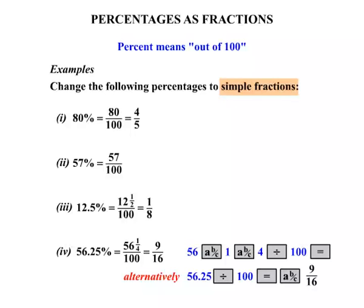Now if you press the ABC button again, it changes it back to 0.5625, so it alternates between the fraction and the decimal.